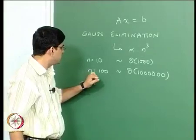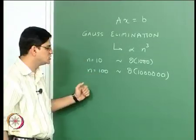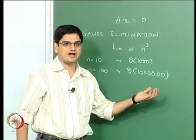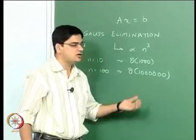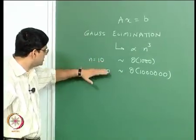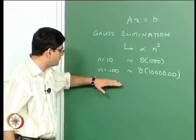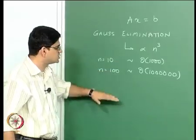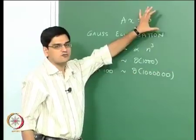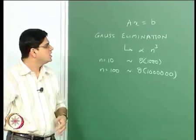Now, if from n equal to 100 we go to n equal to 1000, the amount of computation required is going to be 10 to the power 9. So as we increase the number of equations that we are solving, the amount of effort required in Gauss elimination increases very rapidly.